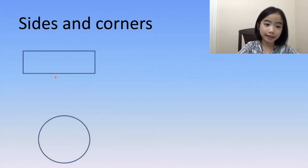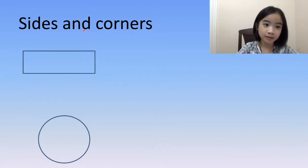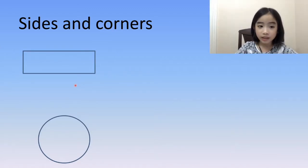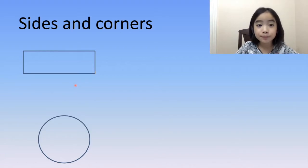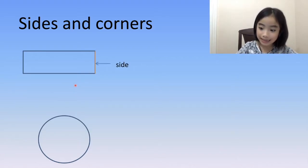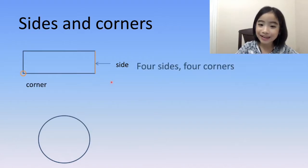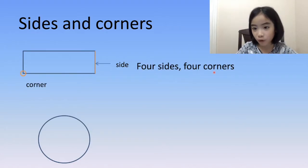Now, let's look at the rectangle. The rectangle is similar to the square. A rectangle has sides and corners — a rectangle has four sides and four corners.